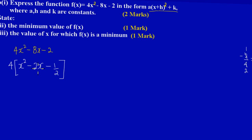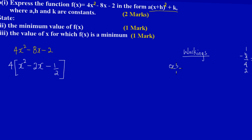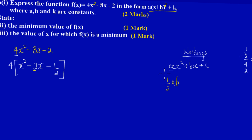Now for the next step — and it's always advisable to show your workings, because in the exam the examiner can check where you went wrong and you may still pick up a mark. Remember the general form of a quadratic is ax² + bx + c. We have just factored out the leading coefficient a, which is 4. Now what I'll do is take half of b and square it.